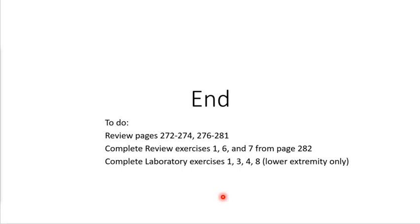Most knee muscles are redundant from the hip or ankle. The only exclusive knee muscles are the popliteus and the short head of the biceps femoris — plus the quadriceps group. For review, complete the exercises listed on pages 1, 6, and 7, and attempt lab exercises 1, 3, 4, and especially number 8 for lower extremity movements, including agonist-antagonist components. If you need more detail, review the hip lecture or the anatomy tour, and make sure you're up to speed on the ligaments and the screw home mechanism. That's it for the knee — we're moving on to the foot and ankle.